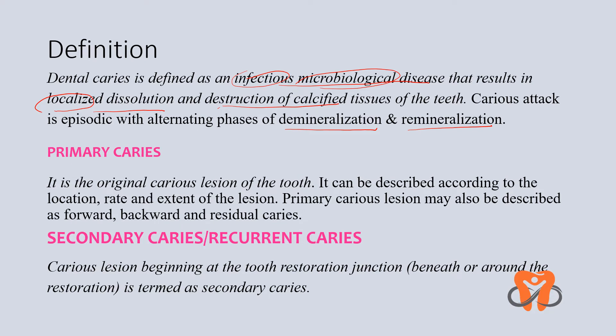Primary caries is the original caries lesion of the tooth. It can be described according to its location, rate, and extent of the lesion. Primary caries lesion may also be described as forward, backward, and residual caries — meaning all the named caries types we discussed are primary caries lesions.